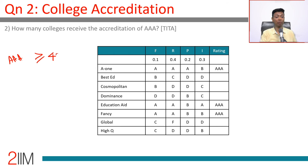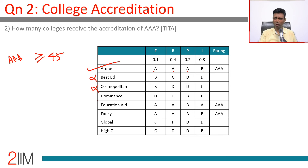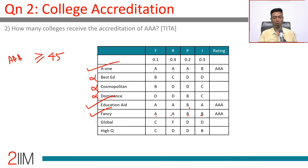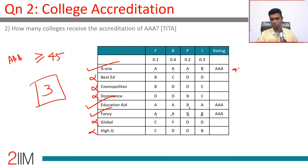How many colleges receive AAA accreditation? AAA requires an overall score ≥ 45. A1 has A, A, A, B — the three A's carry weightage 0.7, so overall ≈ 47. That works. Bested has B, C, D, D — no 50s, not possible. Education Aid has A, A, B, B — the 0.5 weightage at 50 and 0.5 at 40 averages to exactly 45. That works. Global has an F — no A's — ruled out. So three colleges receive AAA.